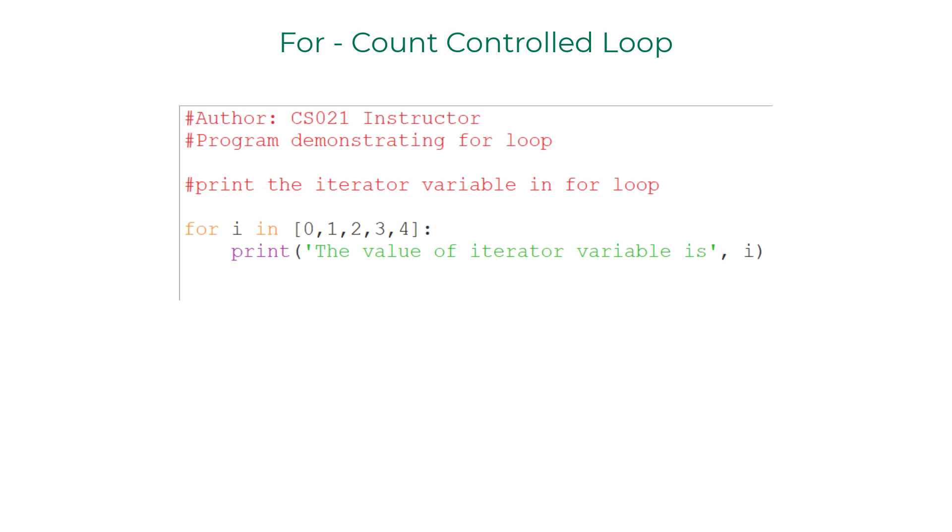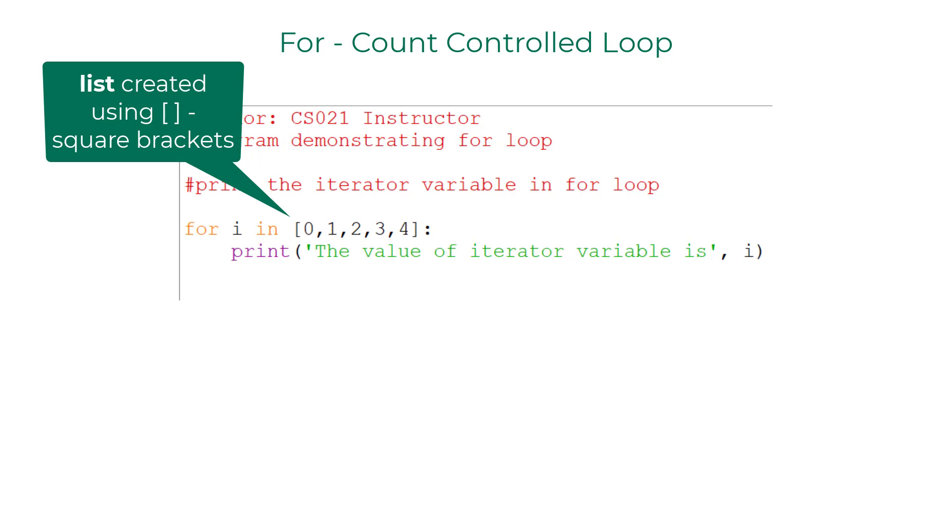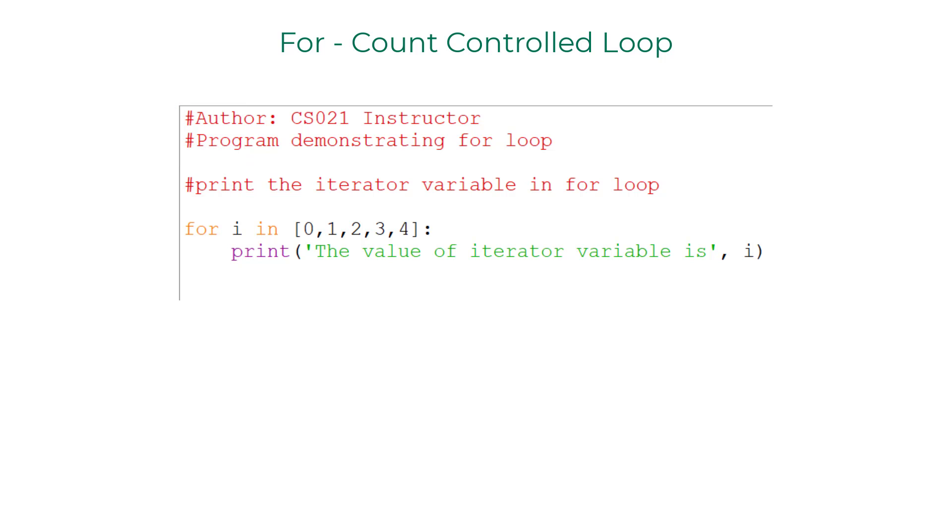Let's take a look at this program. For I in the list of these numbers 0, 1, 2, 3, 4 colon print the value of iterator variable is i.